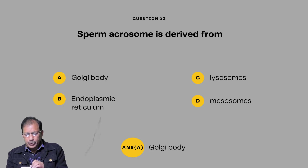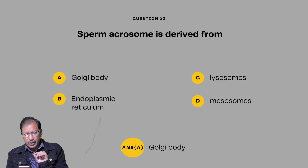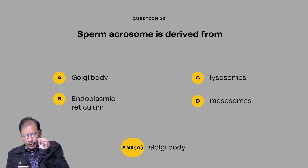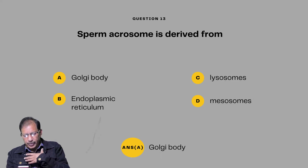Question number thirteen: Sperm acrosome is derived from — Golgi body, endoplasmic reticulum, lysosome, or mesosome. The acrosome, which is the head part of the sperm, is derived from the Golgi bodies.